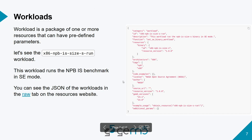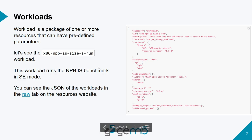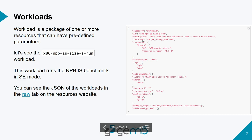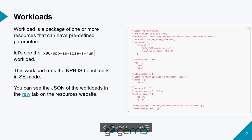Running single resources is straightforward. Now let's talk about workloads. Workloads are what we mainly use to run proper programs — they contain one or more resources with predefined parameters. On screen is an x86 workload for the NPB integer sort benchmark with size S, specifically to run in SE mode, which is why it just has one binary. It specifies the function to be called — set_se_binary_workload — and the version and ID of the binary to run.